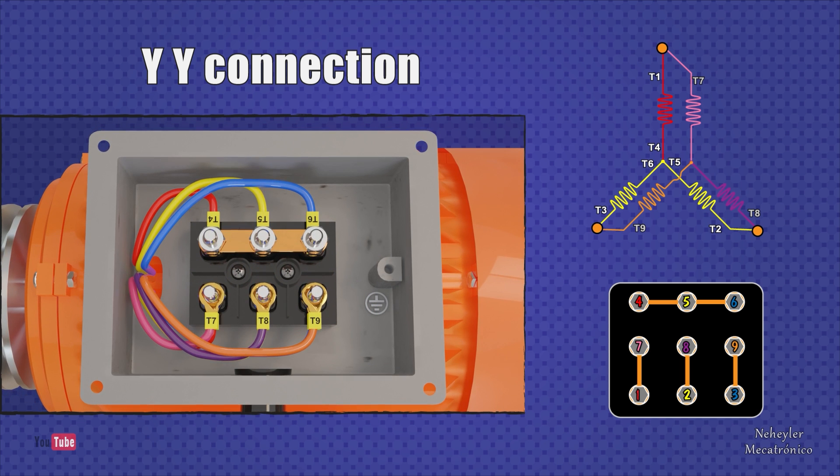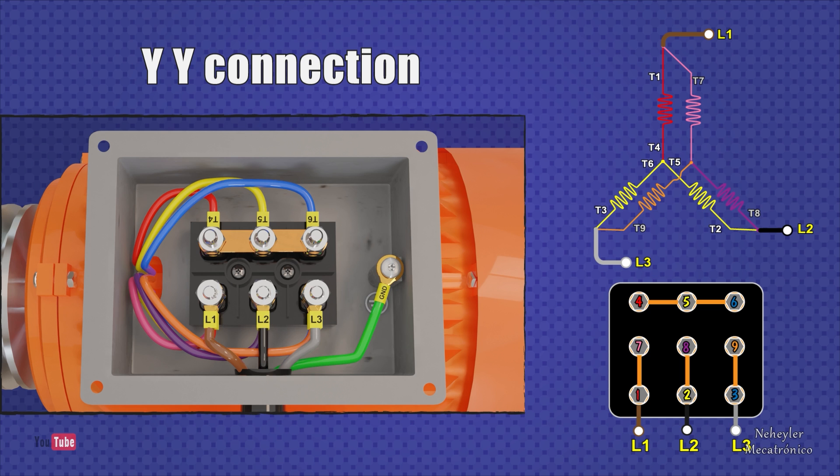Terminal 7 should be joined to Terminal 1, Terminal 8 to 2, and Terminal 9 to 3. Finally, we connect the power cables. L1 next to T1 and T7, L2 next to T2 and T8, L3 next to T3 and T9. Keep in mind that the ground protection cable must be added.